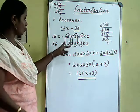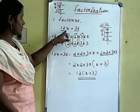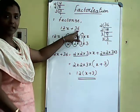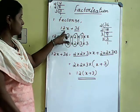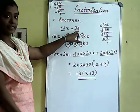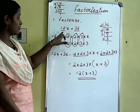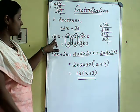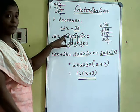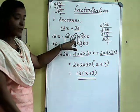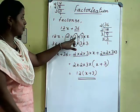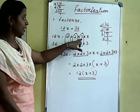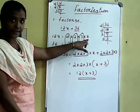Let's continue our class. What is it? 12x plus 36. So, two terms: 12x and 36. First, we write 12x — that is, 12 as a product of primes. So here it is: 2 into 2 into 3 into x.